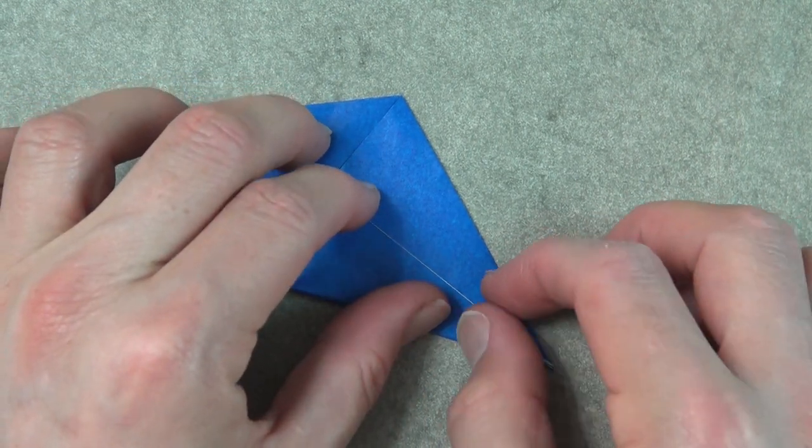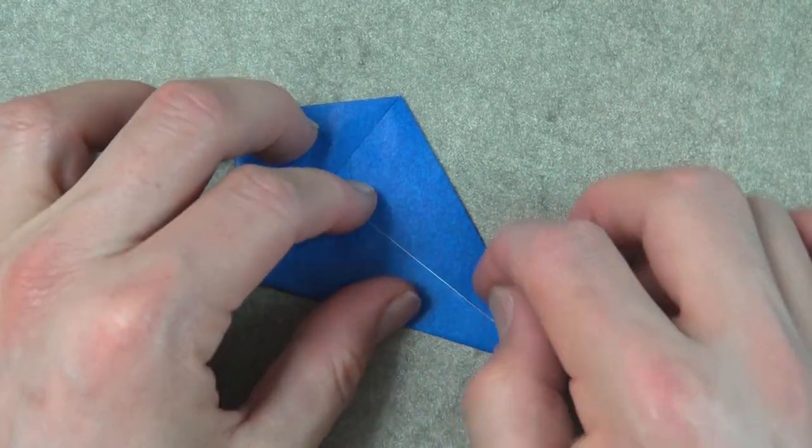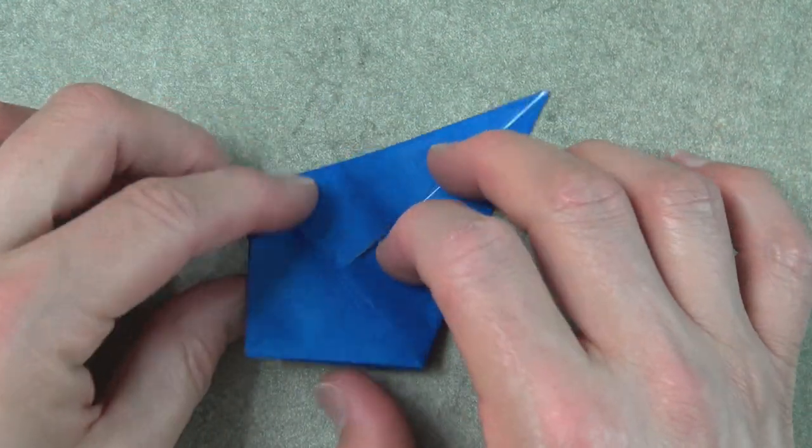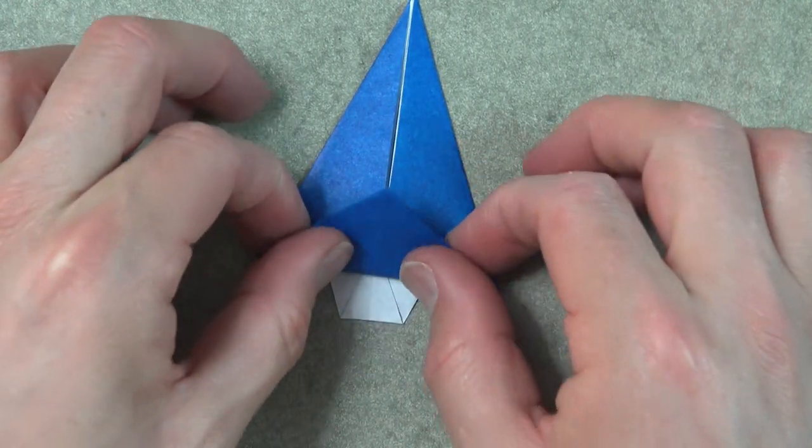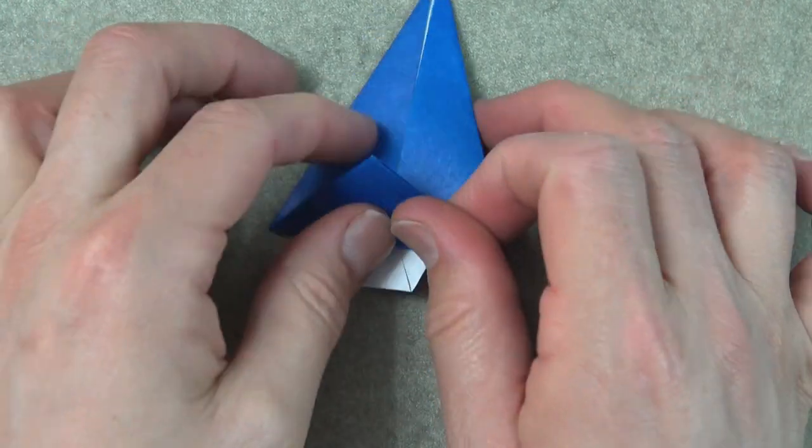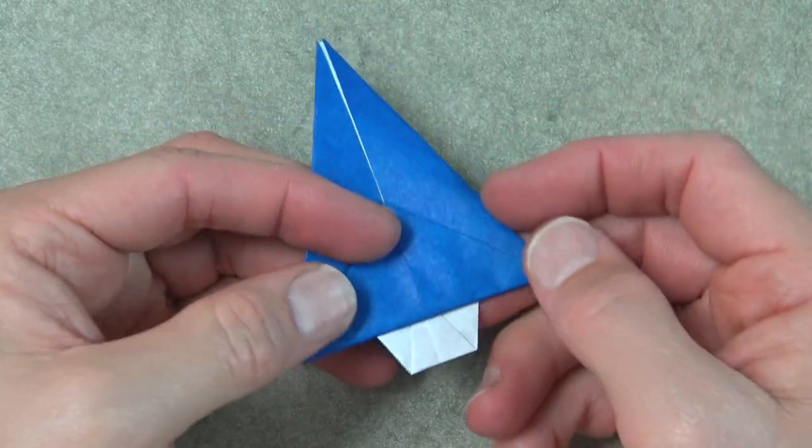We're going to make a petal fold. Rotate and fold this flap over these edges. And ta-da, it's a Christmas tree.